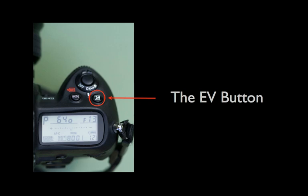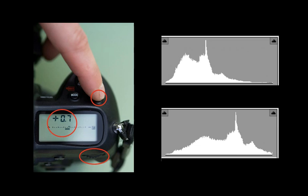The EV button is located on different parts of different cameras, but almost always looks the same no matter what brand of camera you're shooting. It has a button with a little plus and minus sign on it. The way you would use this button to affect the histogram is fairly straightforward.